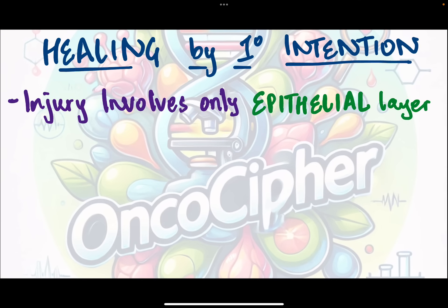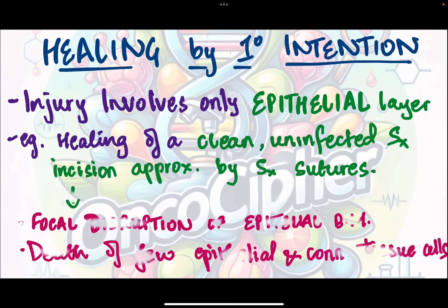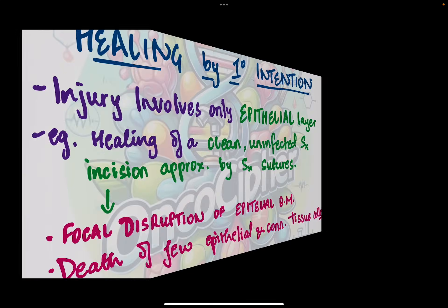In primary intention healing, injury involves only the epithelial layer. An example is the healing of a clean, uninfected surgical incision which is approximated by surgical sutures. There is only focal disruption of the epithelial basal membrane and death of only a few epithelial and connective tissue cells.